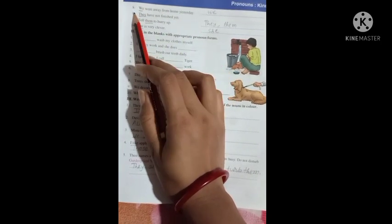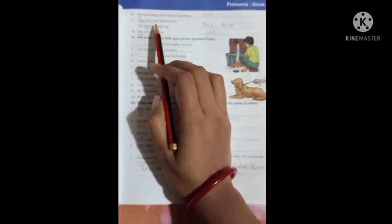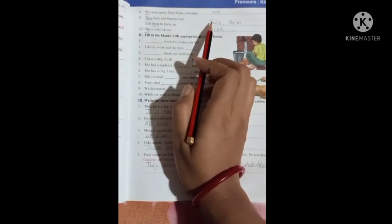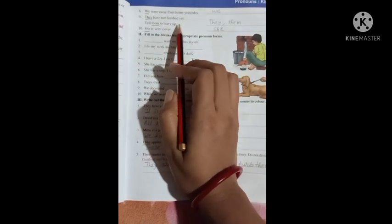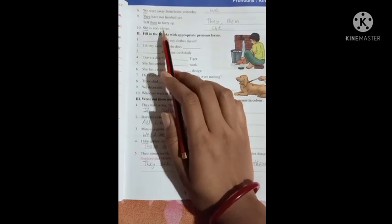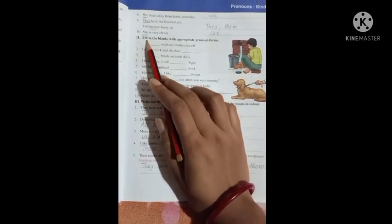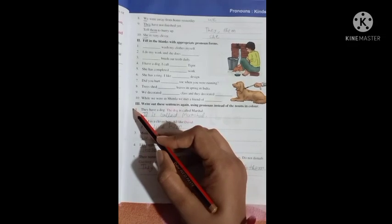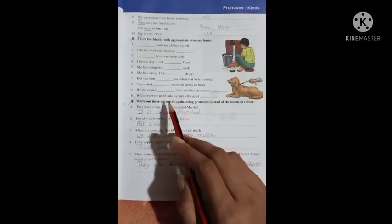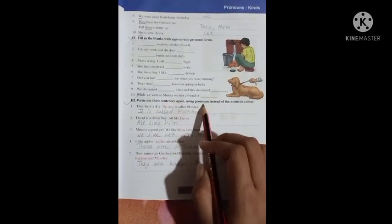We were away from home yesterday. We. They have not finished yet. They. Tell them to hurry up. Them. She is very clever. She. Skip this question and come to the next question. Question number three: write out these sentences again using pronouns instead of the nouns in color.